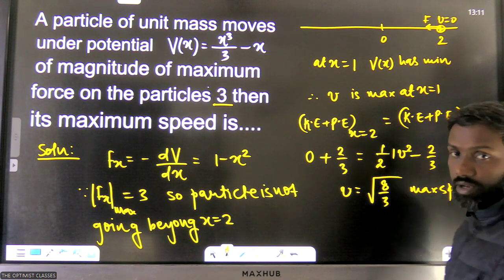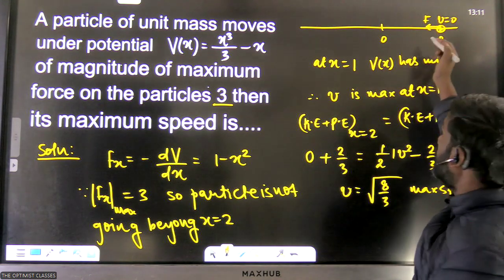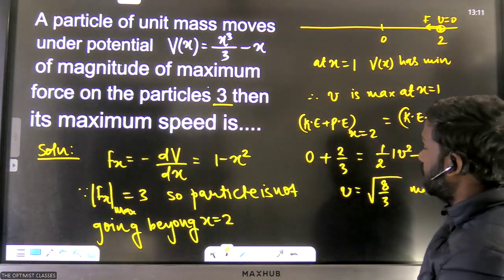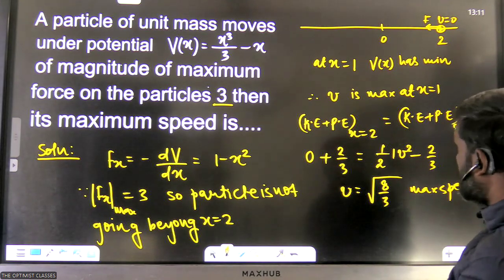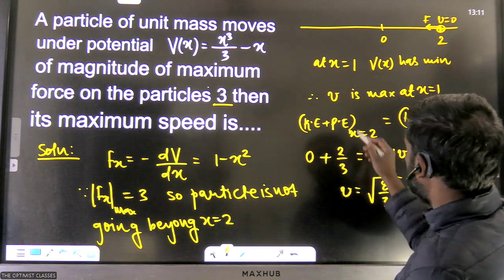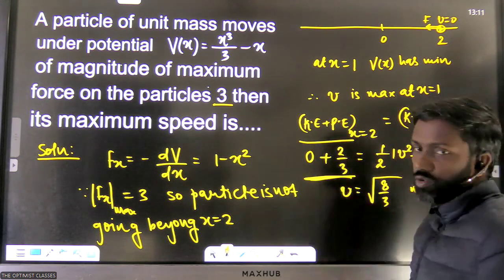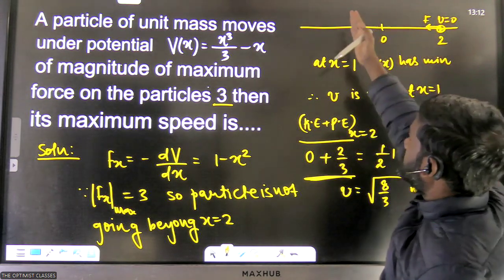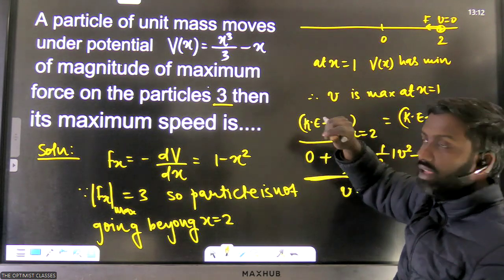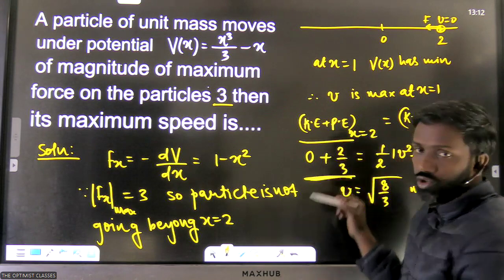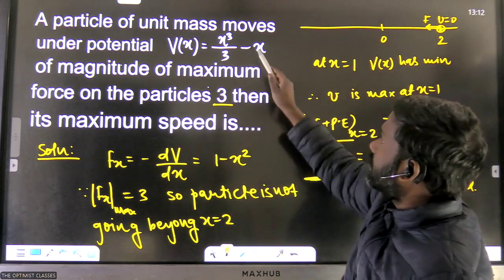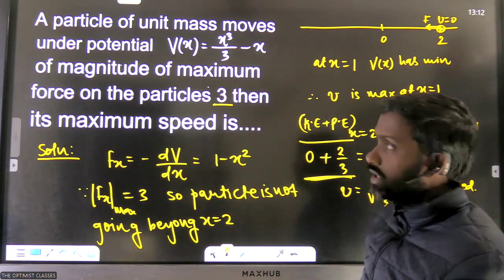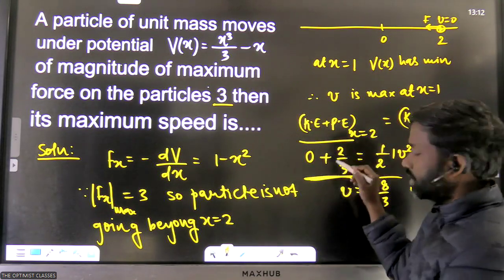The particle is not going beyond x = 2; the force there is −3 (directed toward negative x), so it moves in the negative x direction. We need to find where it stops again. The total energy is 2/3, so the particle stops where potential energy equals 2/3 and KE becomes zero. Substituting x = −1 into the potential: (−1)³/3 − (−1) = −1/3 + 1 = 2/3. So potential energy equals 2/3 at x = −1.